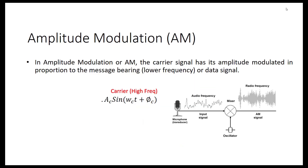In amplitude modulation, the carrier signal has its amplitude modulated in proportion to the message-bearing low-frequency or data signal. Imagine that we have a data signal and a carrier, and now we want to do modulation. In AM, almost all modulations involve first doing upconversion and also modulation — we are doing them both at the same time.